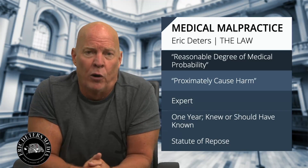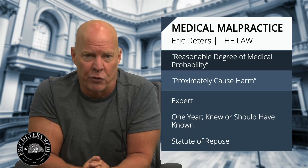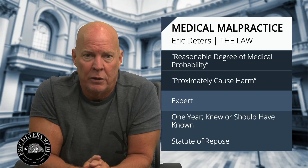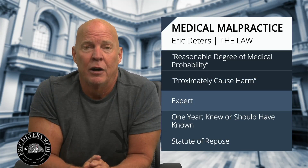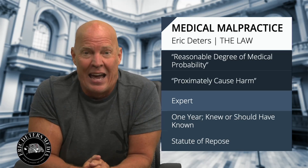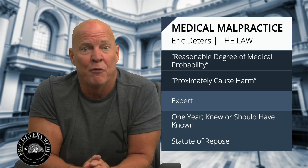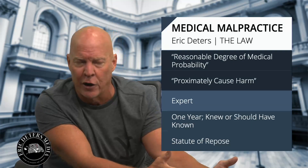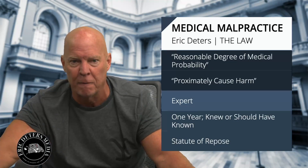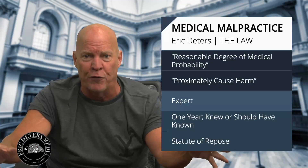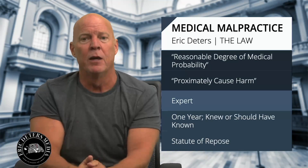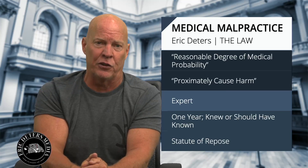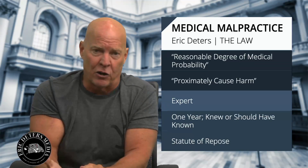One of the most important things in a case is your expert. You have to have an expert in any state in the country for your medical malpractice case. That expert needs to be in the field that you have — if it's a cardiologist, you want a cardiology expert, not an ER expert. That expert has to review all the facts and say, based upon a reasonable degree of medical probability, that the cardiologist at Salem's Medical Center was negligent and it caused harm.